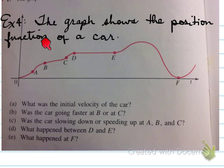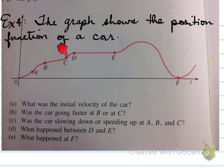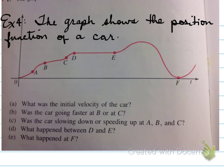This is the position function of a car. The initial velocity would require finding the derivative of the function at 0 — what's the slope of the tangent at that point? Was the car going faster at B or at C? Looking at the slope of the tangent at each point, B has a greater slope than C. So the velocity is faster at B because the slope of the tangent is steeper there.